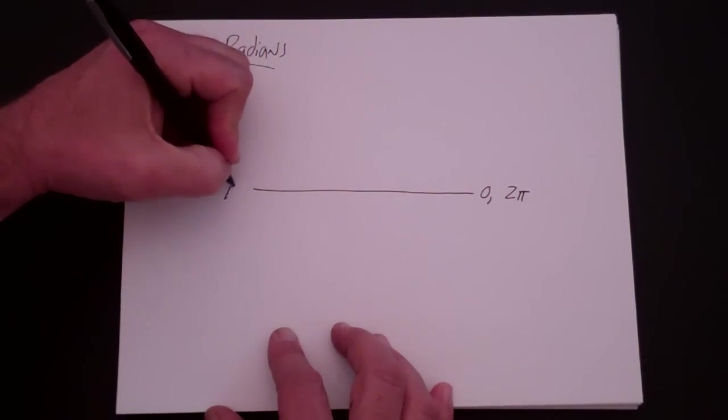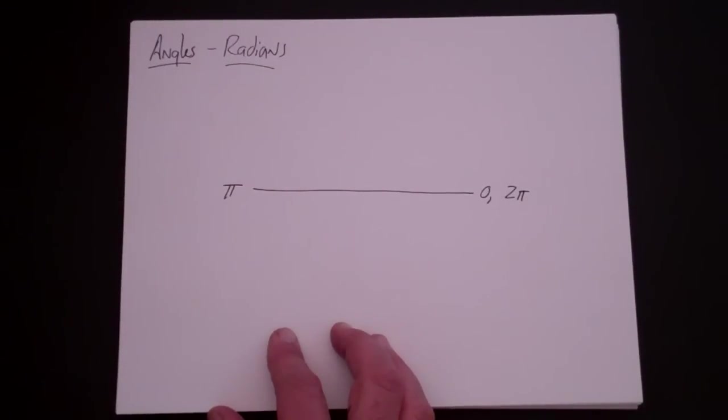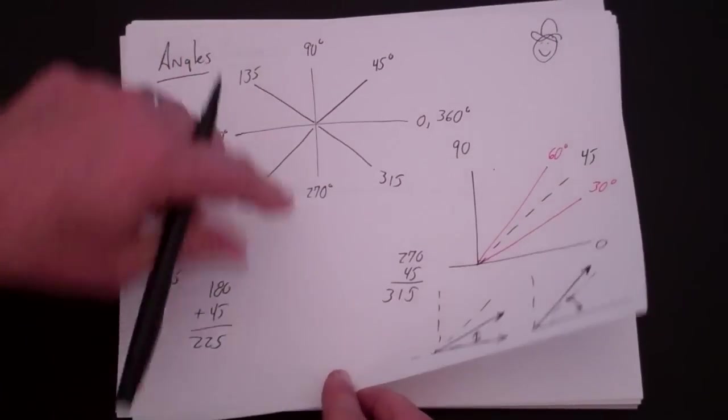halfway will be pi radians. That's a half semicircle. That's exactly like the relationship between 360 and 180.